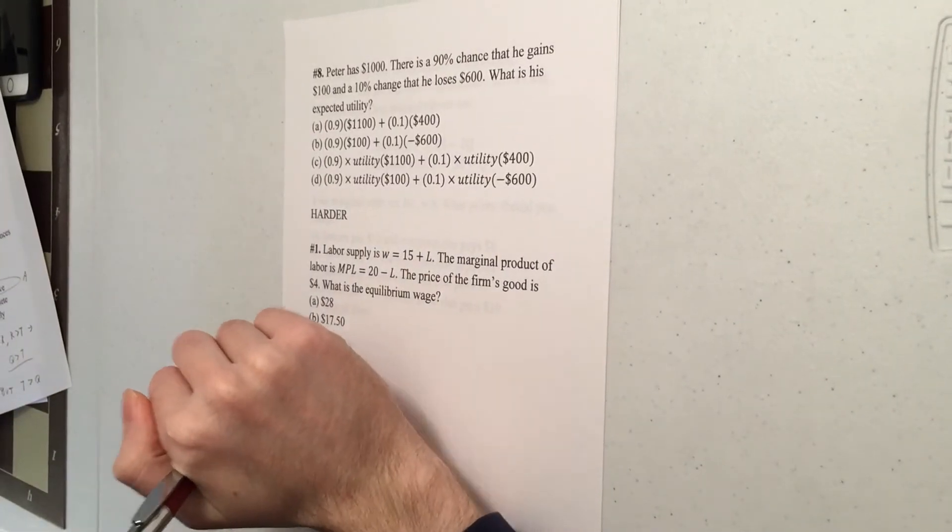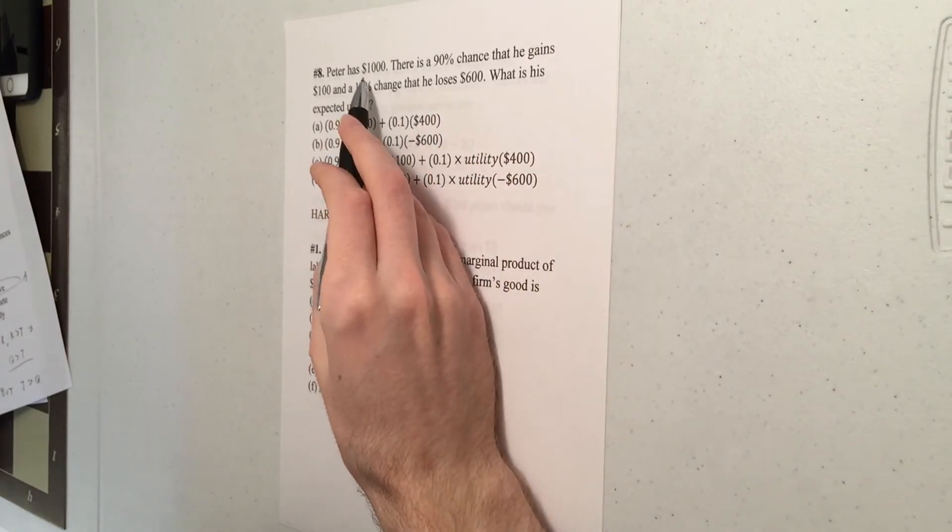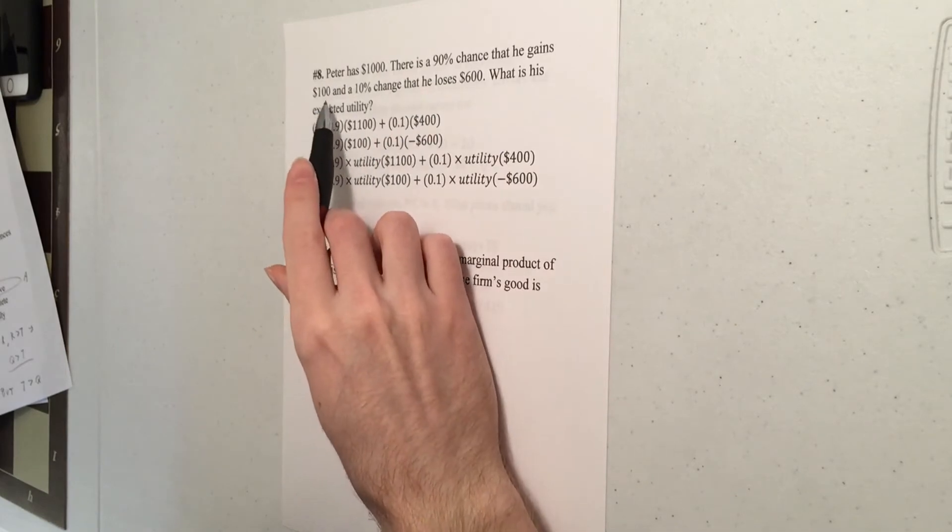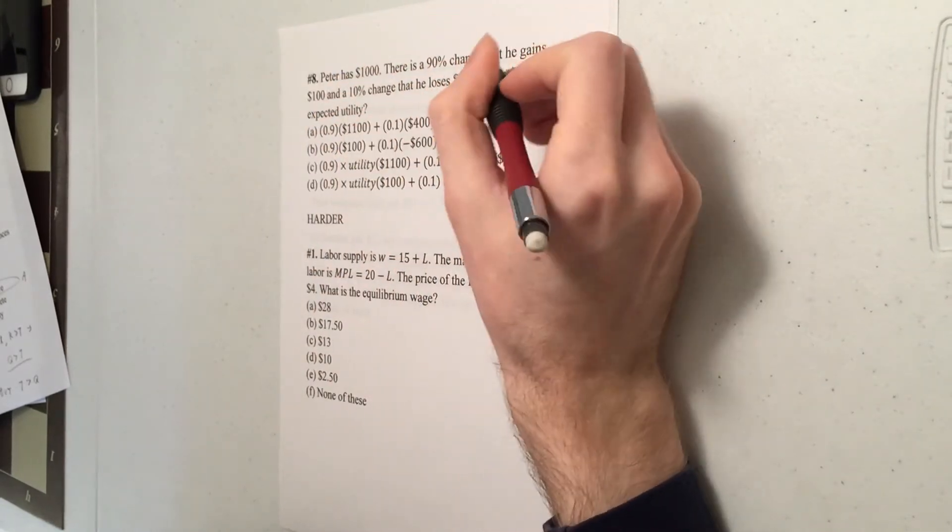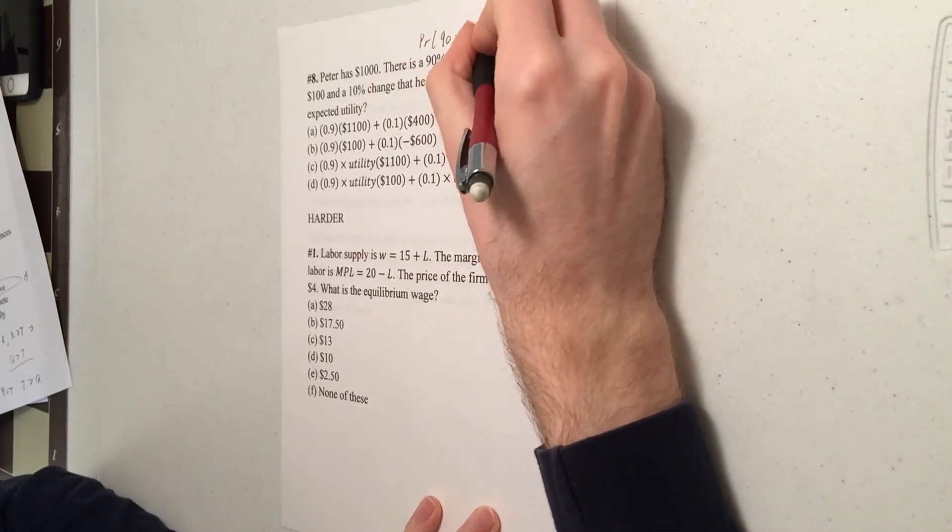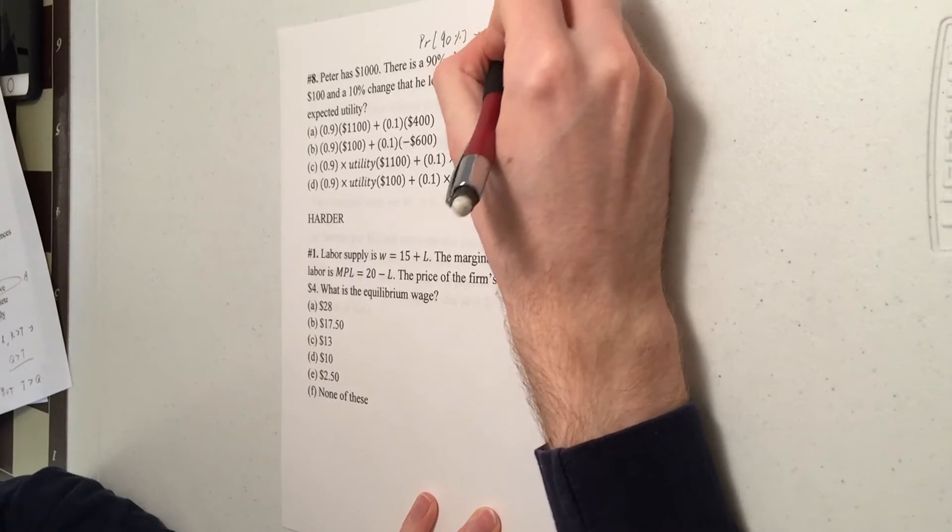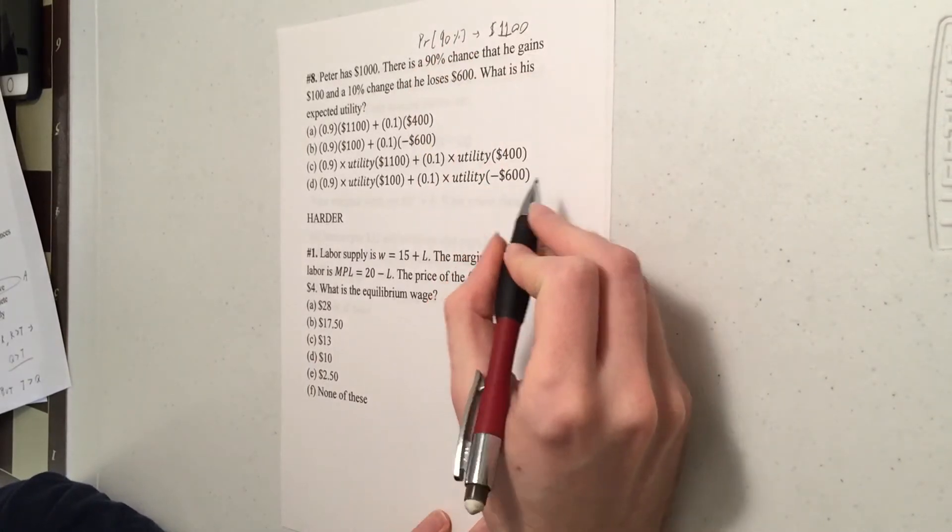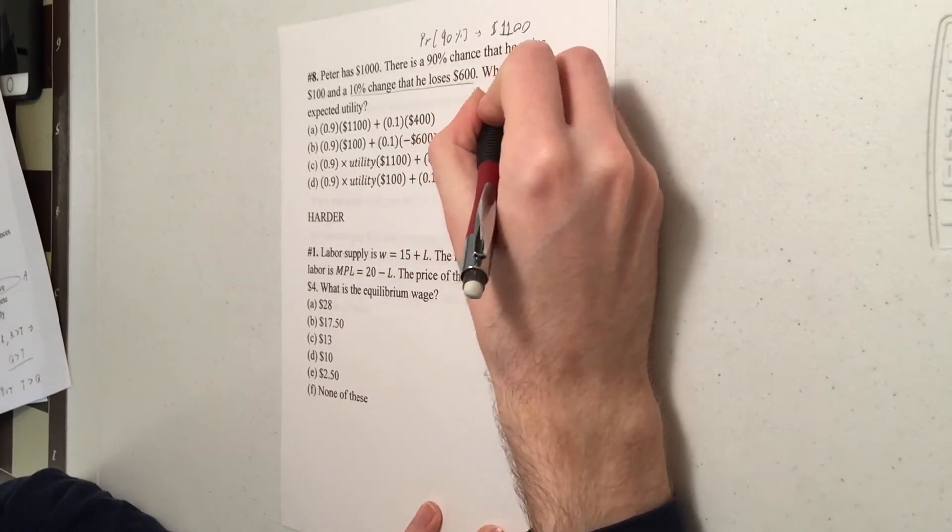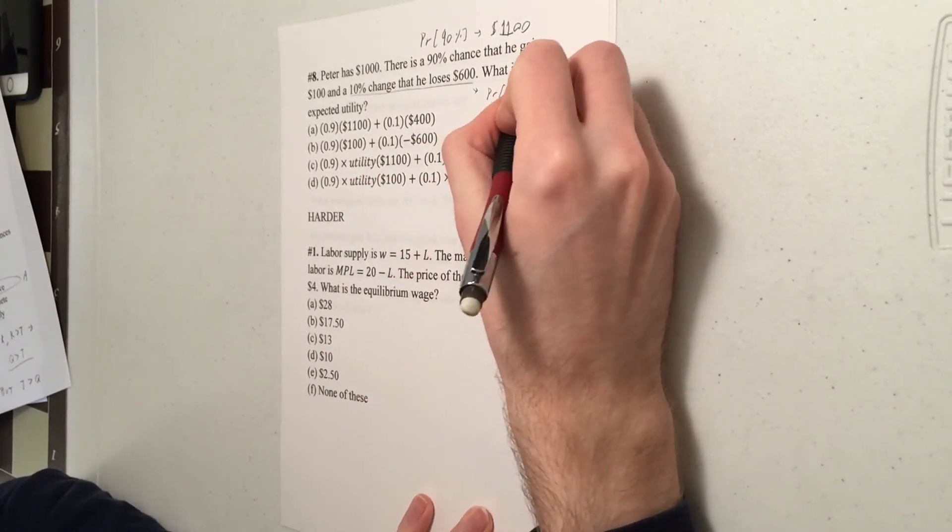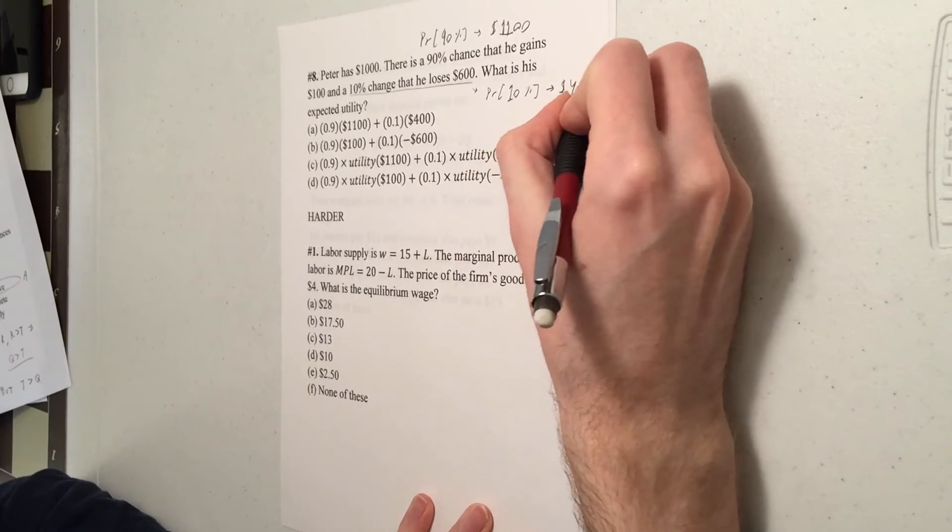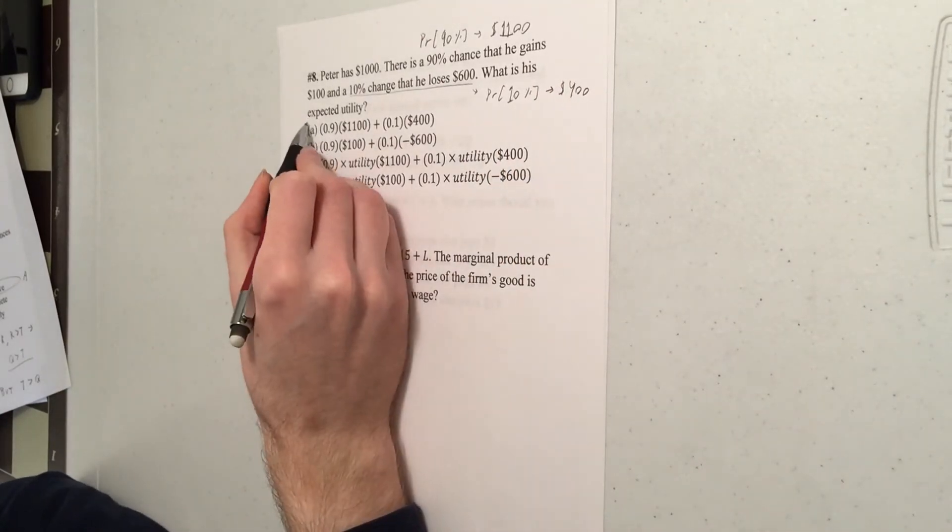Number eight, last in our easy section. So Peter has $1,000 with probability 90%. He gains a hundred. So probability 90%, he has a total of 1100. And a 10% chance of losing 600. So probability 10%, he'll have a thousand minus 600, which is 400. We're trying to find his expected utility.